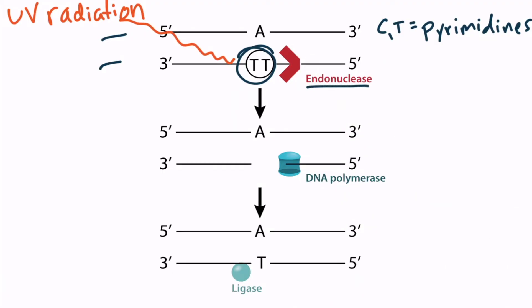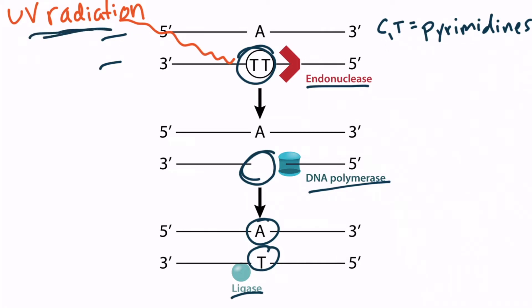The cell repairs this bulky DNA alteration through several steps. Endonuclease enzymes remove the dimer. Next, DNA polymerase fills in the empty space. Finally, ligase seals the nicked region. The bottom strand of DNA now correctly shows one T paired with one A. The key takeaway is that this type of repair is associated with UV radiation and xeroderma pigmentosum.